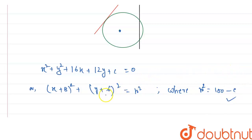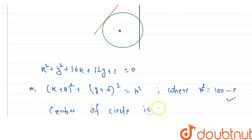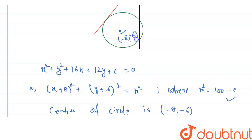From this, we have the center of the circle. The center of that circle is (-8, -6). So, the coordinate of that center point is (-8, -6).